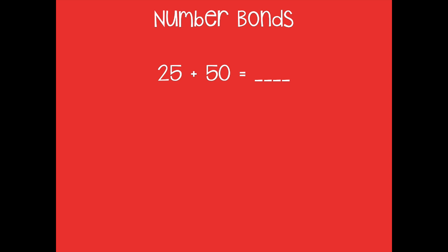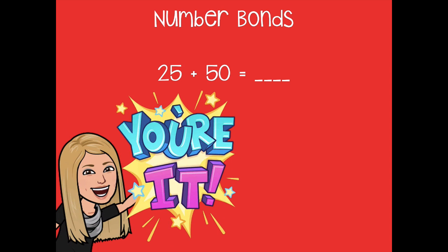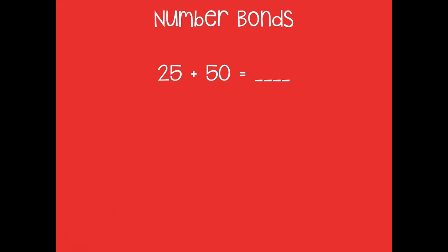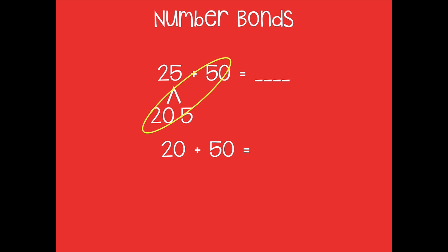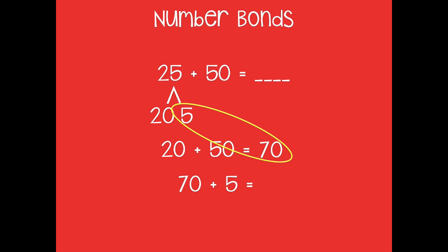Let's use the number bond to solve 25 plus 50. Pause the video, solve this problem, and then click play when you're ready to go over it together. I'm going to break apart 25 into the tens and the ones to make it easier to add: 20 and 5 make up 25. Then I add my tens: 50 plus 20 equals 70. Now I add 70 and 5, so 70 plus 5 equals 75. So 25 plus 50 equals 75.